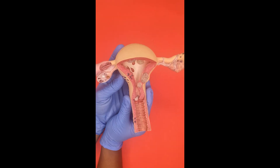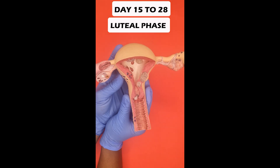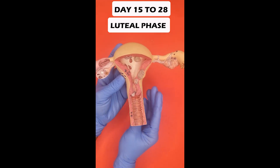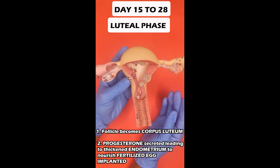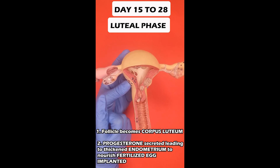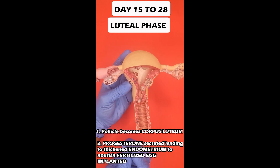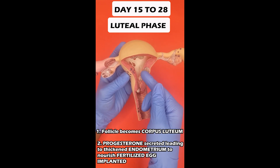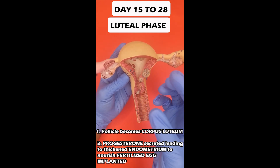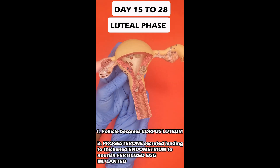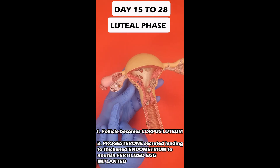After ovulation is the luteal phase, which is between day 15 and day 28. During this time, the ruptured follicle turns into a corpus luteum, which secretes progesterone. Progesterone further thickens the endometrial lining, making it spongy and capable of nourishing a fertilized egg.